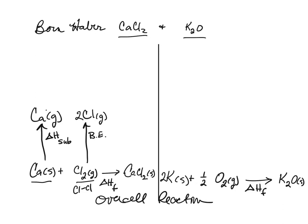Now let's see how that's different on the right-hand side with K₂O. I'm again turning potassium into potassium gas atoms, but I have to keep it balanced. There are two moles of solid potassium, so I need two moles of gas, making it two times the enthalpy of sublimation. For oxygen, it's a diatomic molecule I need to break apart into atoms. I have one-half times two, or one mole of oxygen. Since I'm only breaking bonds for half a mole, it's one-half the bond energy of the O₂ molecule.